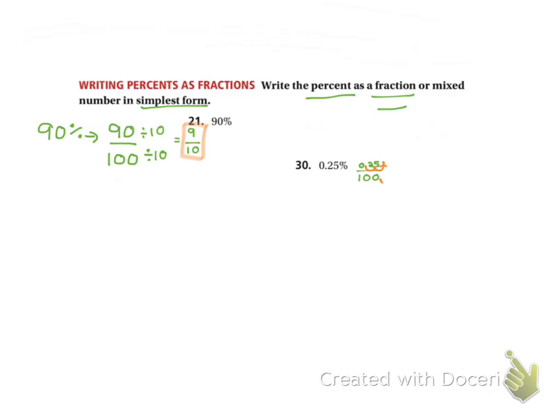If I do that on the top, I have to do it on the bottom. 1, 2 places. Fill in my zeros. I now have 25 over 10,000.